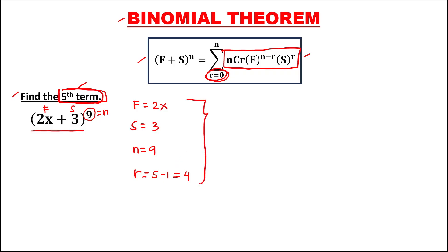From these values we can now find the fifth term. So we have n choose r: n is 9, choose r is 4, then times the first term, 2x, to the power n minus r — so 9 minus 4 — then times the second term, positive 3, to the power r, which is 4.